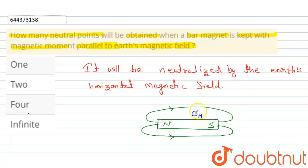And opposite, it means here the earth's magnetic field in this direction. Okay, so it will be neutralized.